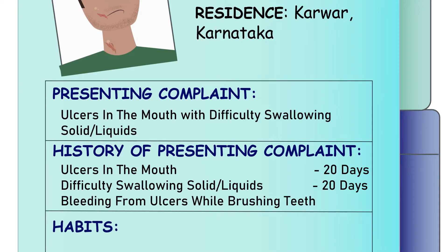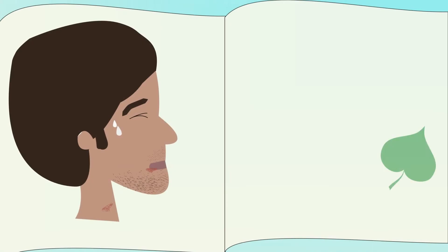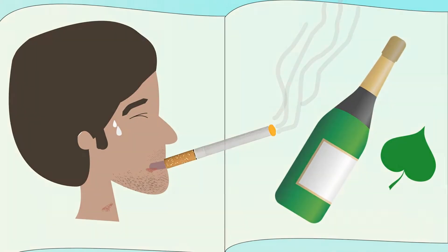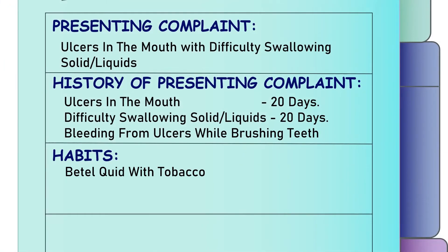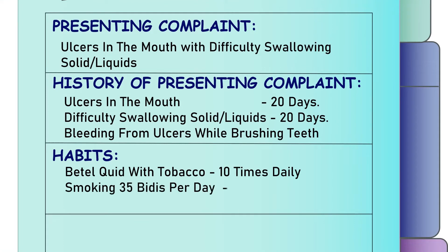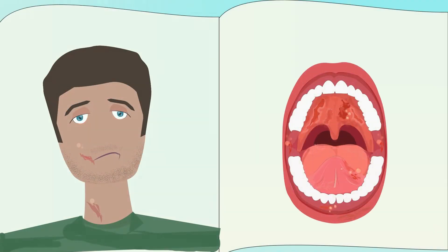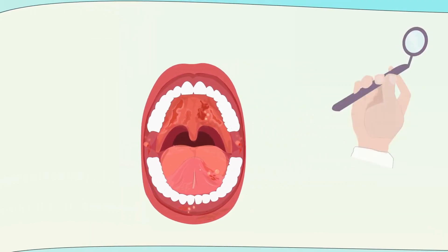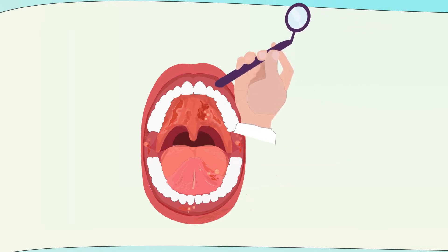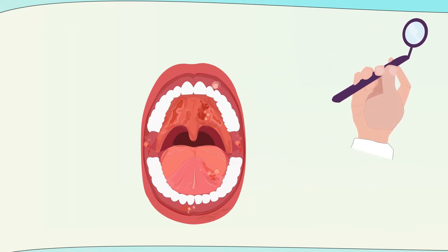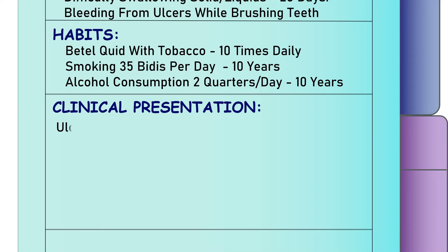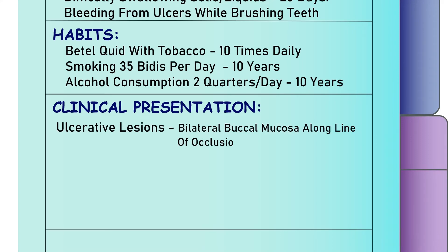Let's take a look at the habits of the patient. His habits included pan chewing 10 times daily, along with smoking 35 bidis and alcohol consumption since 10 years. As per the clinical examination, there is presence of ulcerated lesions on the bilateral buccal mucosa along the line of occlusion.